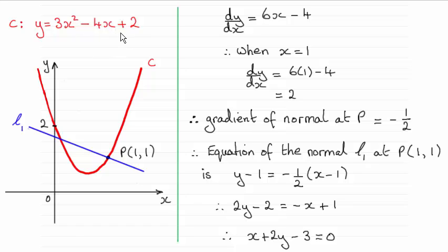So we differentiate it to find the gradient of the tangent at any point x on the curve, and then at P we take x to be 1 and substitute it into dy by dx and get that the gradient of the tangent is 2.